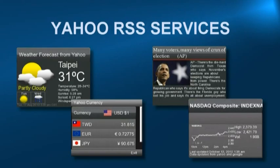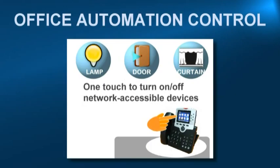Yahoo services offers you weather updates, news, currency and stock information via an RSS feed from yahoo.com. The office automation control feature offers you the ability to control office lighting configured from the XML database by the XML administrator.